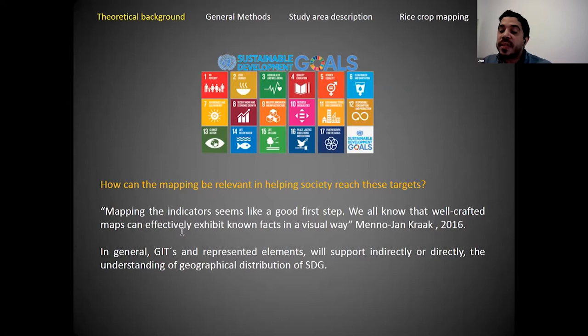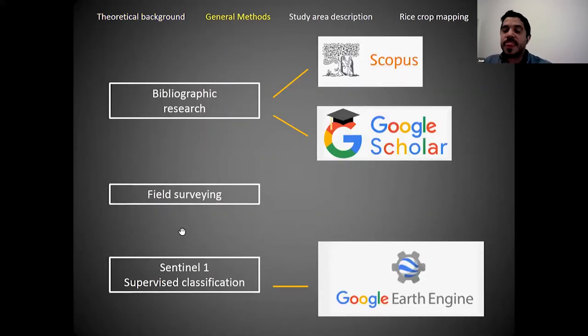For general methods, we'll start with a bibliographic research, probably in Scopus and Google Scholar—very recommended tools for scientific studies. We will have field surveying to better understand the biophysical and socio-economic dynamics of our case study. As a big data tool, we're going to use Google Earth Engine by making supervised classification of Sentinel-1 imagery.